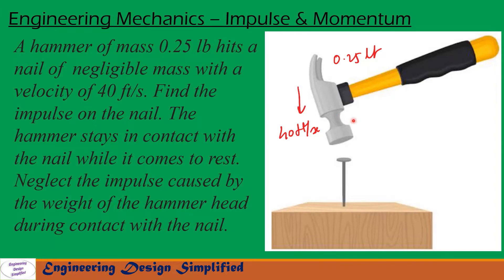In this problem, given is a hammer of 0.25 lb weight hits the nail with the velocity of 40 feet per second. So in this problem we need to find impulse on this nail. Let us see in the coming slides how to solve this problem.